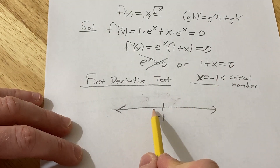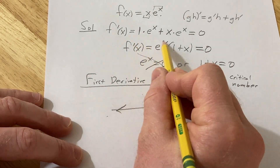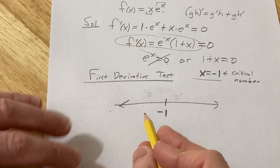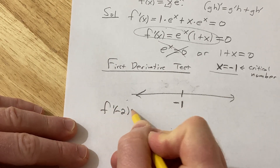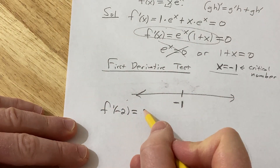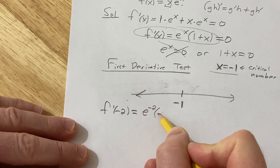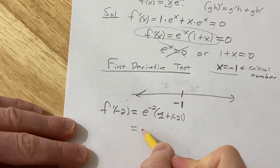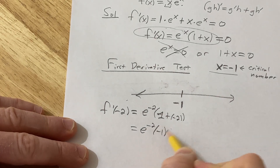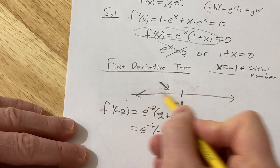We can pick any number smaller than negative one and plug it into the derivative. Let's try negative two. Plugging it in, we get e to the negative two times (1 + (-2)), which is e to the negative two times negative one. That's less than zero, so the function is in fact decreasing on this interval.